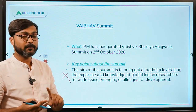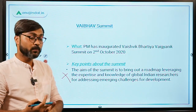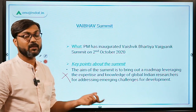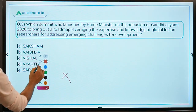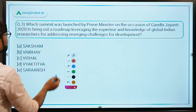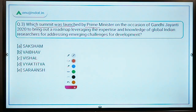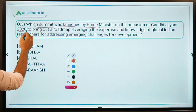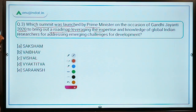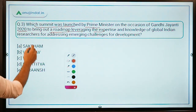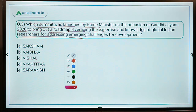Three things to remember: one — the name of the summit (VAIBHAV); two — launched by whom (Prime Minister); three — the basic aim or objective of the summit. The sample question: 'Which summit was launched by the Prime Minister on the occasion of Gandhi Jayanti 2020 to bring out a roadmap leveraging the expertise and knowledge of global Indian researchers for addressing emerging challenges for development?'